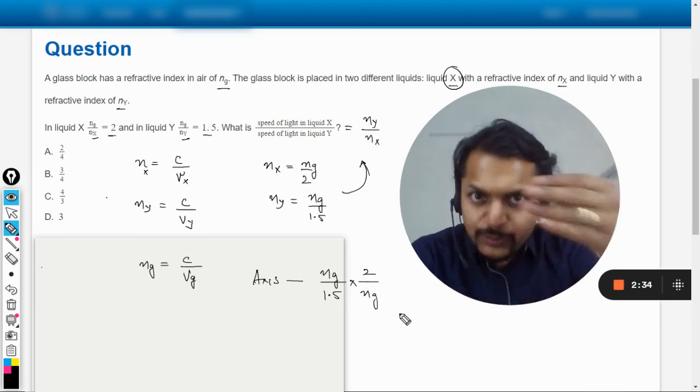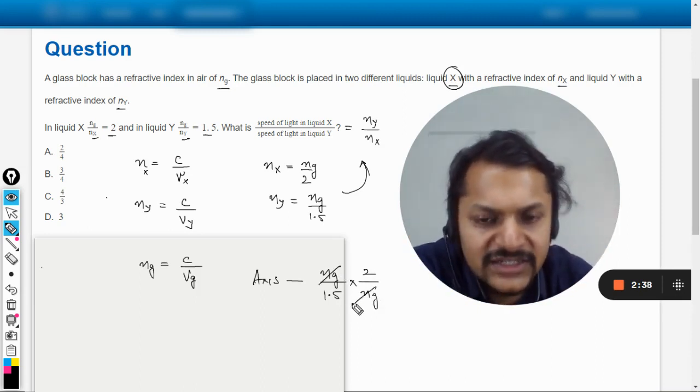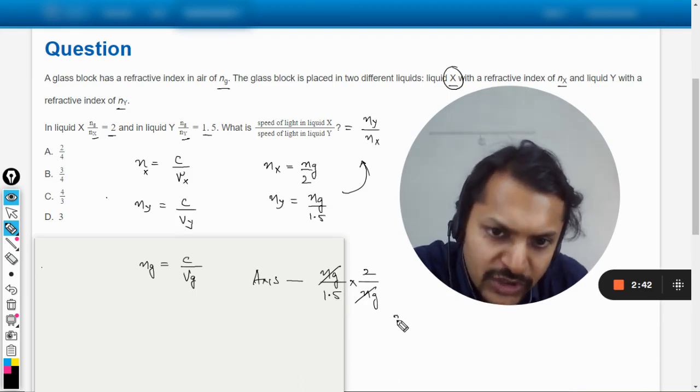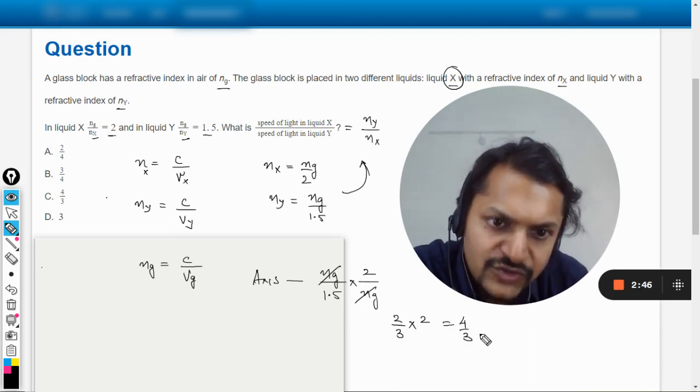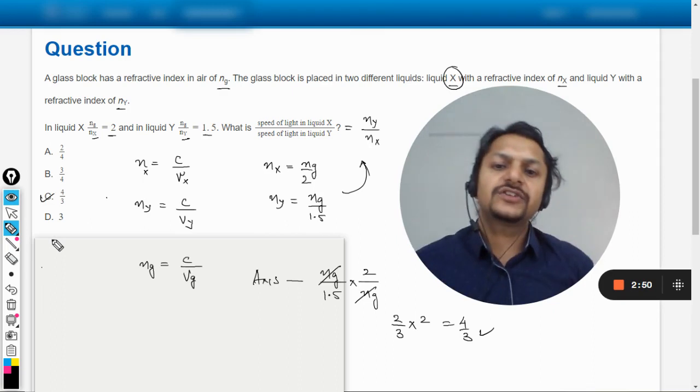So our answer will be: instead of NY it will be NG divided by 1.5, and instead of NX it will be NG divided by 2. So the reciprocal of NG divided by 2 will be multiplied with the equation. NG and NG thereby gets cancelled out. This can be taken as 3/2, so it will be 2/3 multiplied by 2. So the answer should be 4/3. Accordingly, the answer comes out to be C.